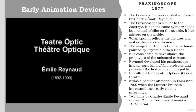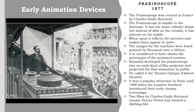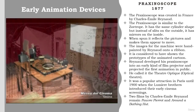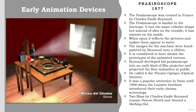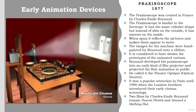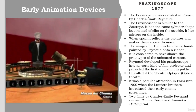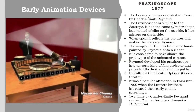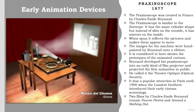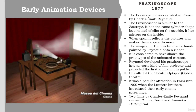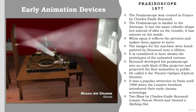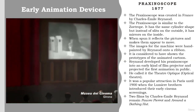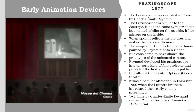The Praxinoscope was created in France in 1877 by Charles-Emile Reynaud. It is similar to the zoetrope — it has the same cylinder shape, but instead of slits on the outside, it has mirrors on the inside. When spun, it reflects the pictures and makes them appear to move. These mirrors provided a clearer and more vivid animation than looking through slits. The images were hand-painted by Reynaud onto a ribbon. It is considered to have shown the first prototypes of the animated cartoon. Reynaud developed his Praxinoscope into an early kind of film projector and projected the first animation in public, calling it the Theatre Optique. It was a popular attraction in Paris until 1900, when the Lumière brothers introduced their early cinema screenings. The audience began to wane, but Reynaud did not want to make films like the Lumières and continued the manual work, and was left behind the times.